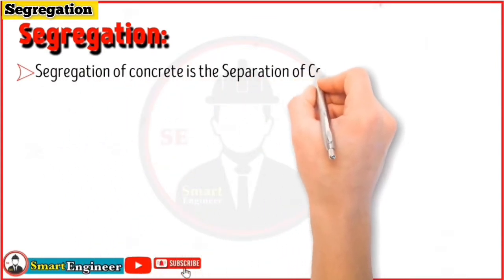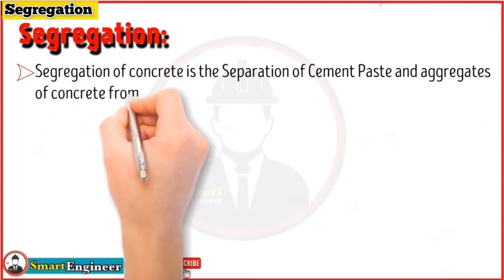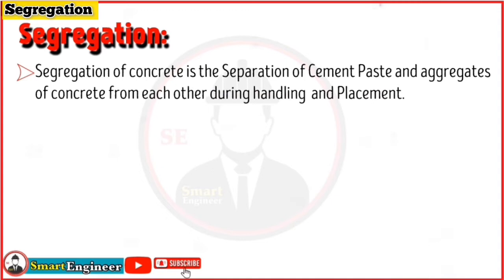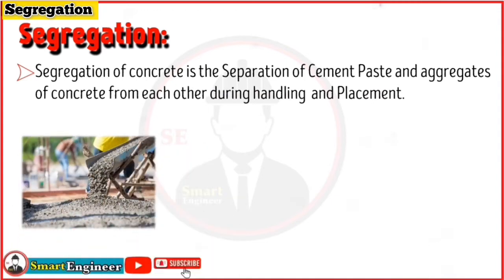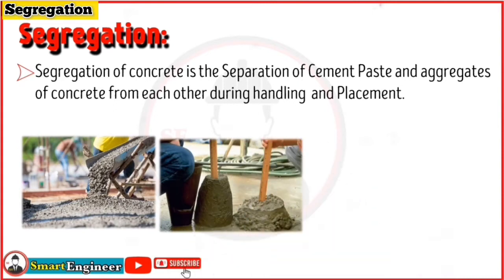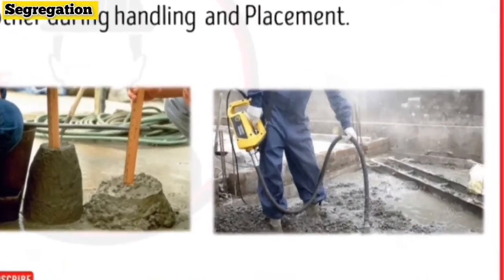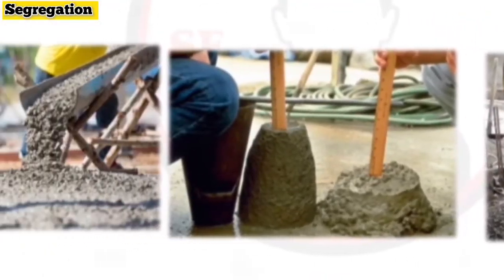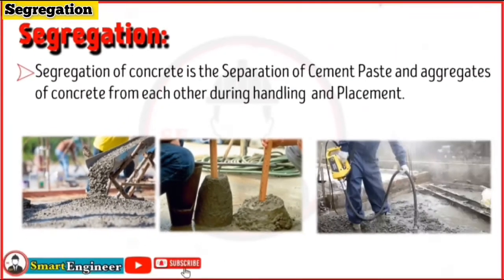Segregation of concrete is the separation of cement paste and aggregates of concrete from each other during handling and placement. Segregation also occurs due to over-vibration or compaction of concrete, in which cement paste comes to the top and aggregates settle at the bottom.